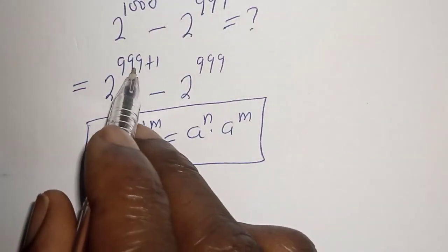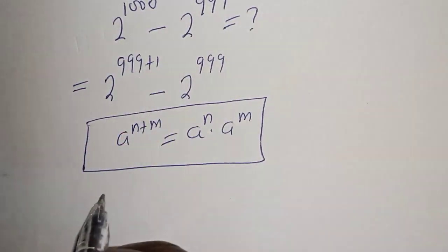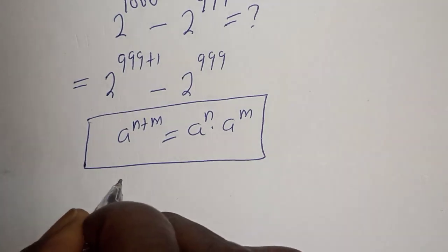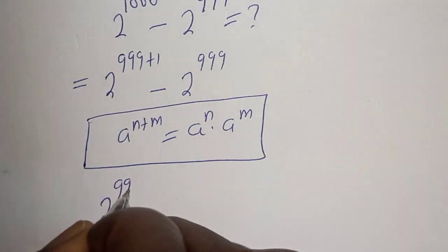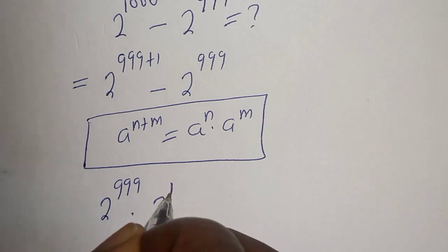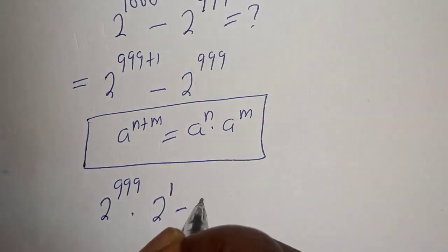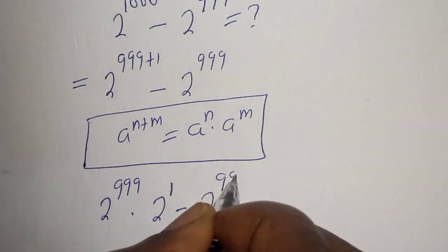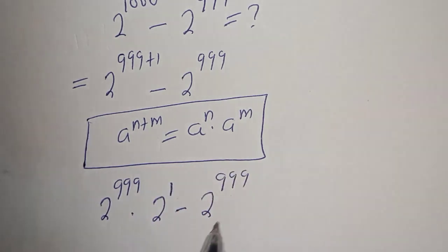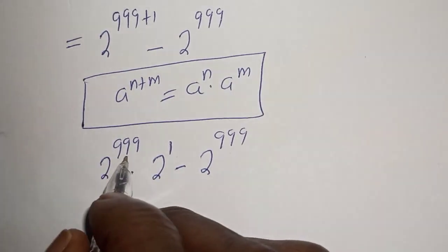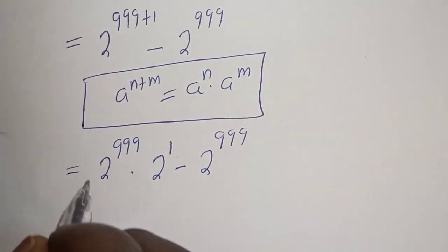Then 2 raised to power 999 plus 1 can be written as 2 raised to power 999 multiplied by 2 raised to power 1, minus 2 raised to power 999.